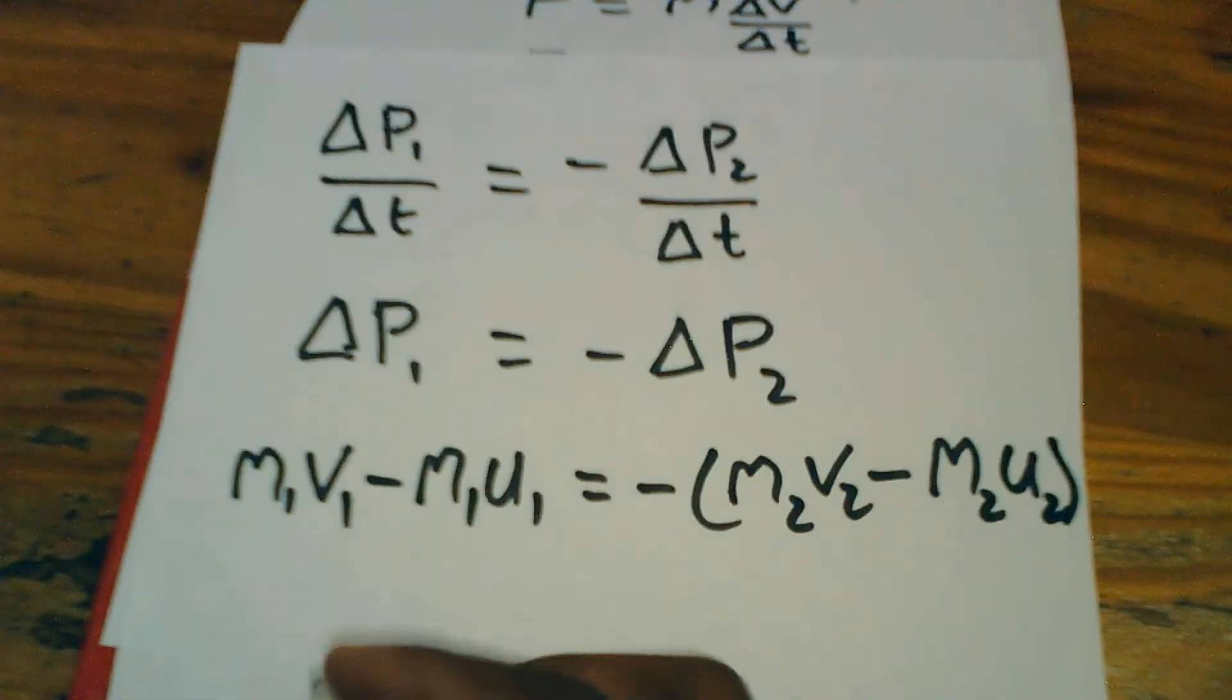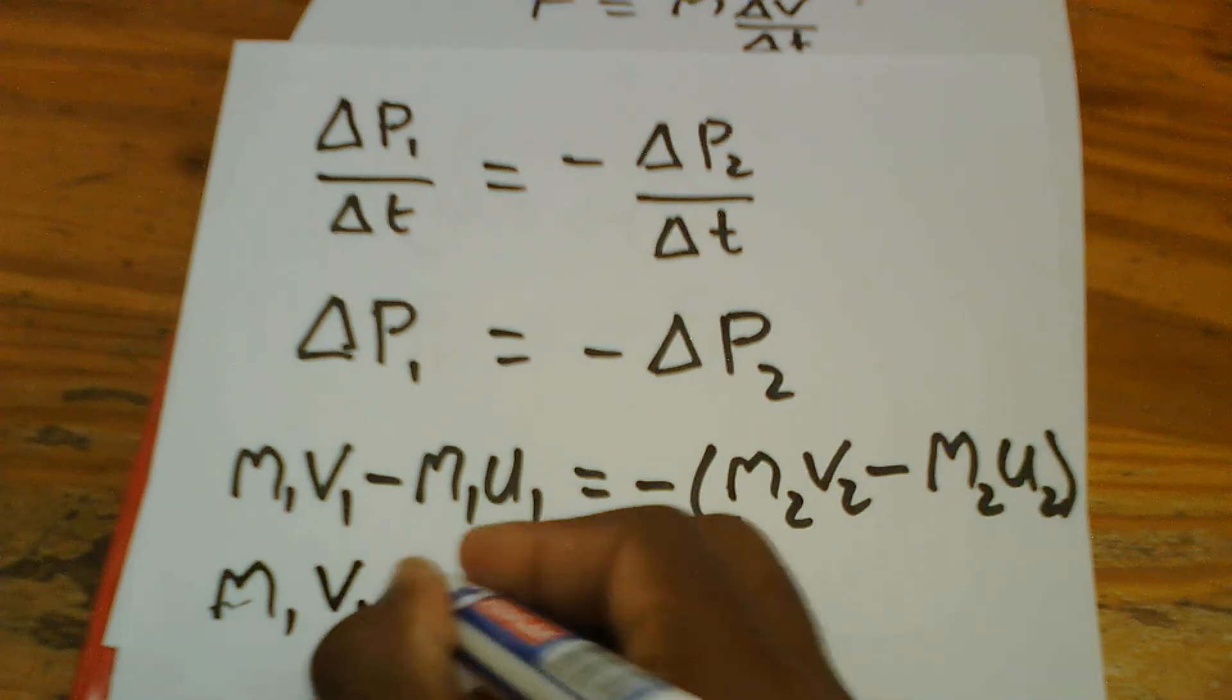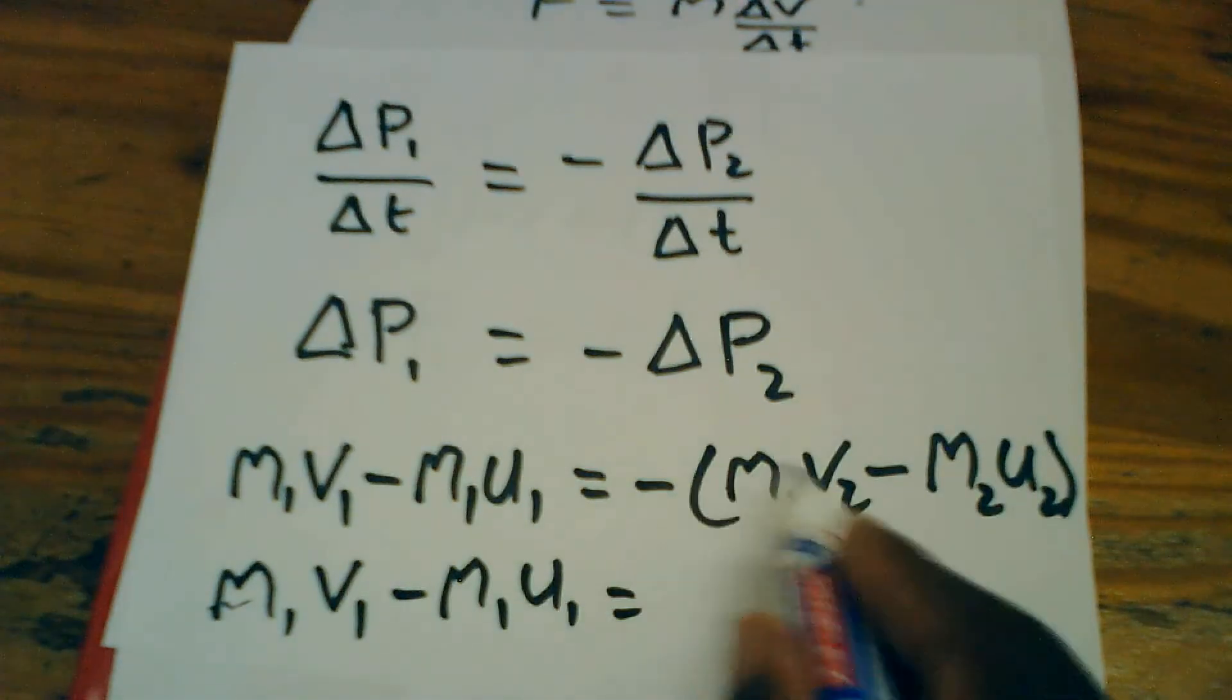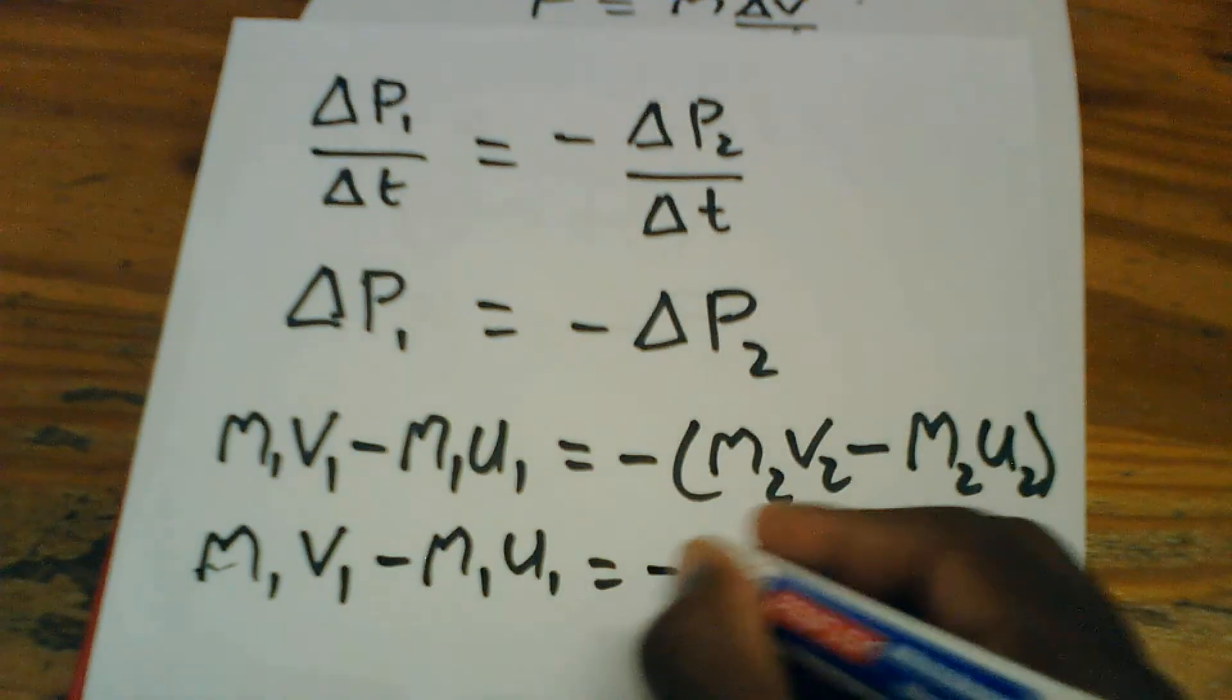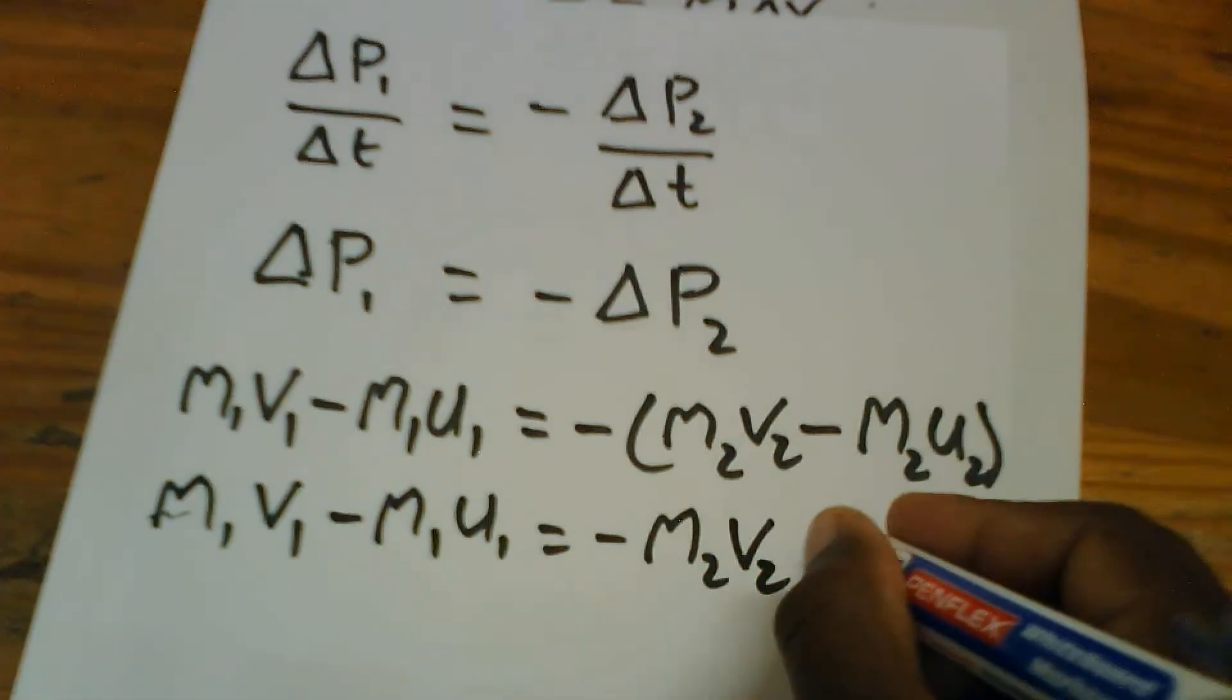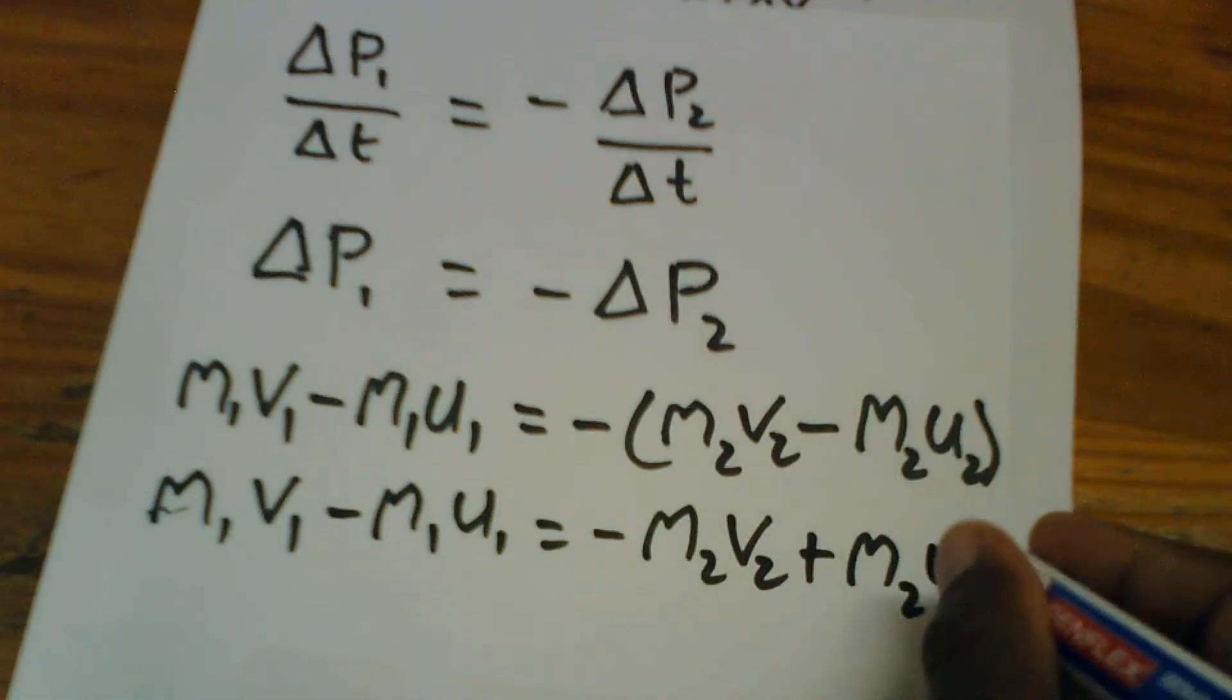If we multiply in by that negative, we're going to get negative M1V1 minus M1U1. If we multiply in by that negative, we're going to get negative M2V2 plus M2U2.